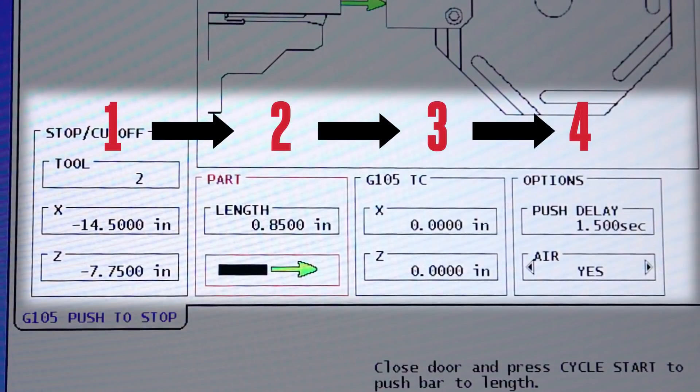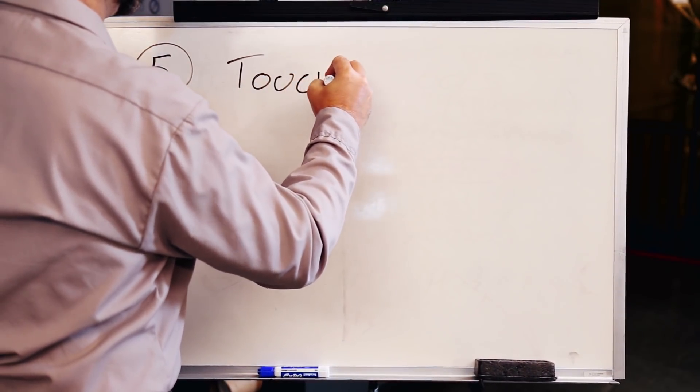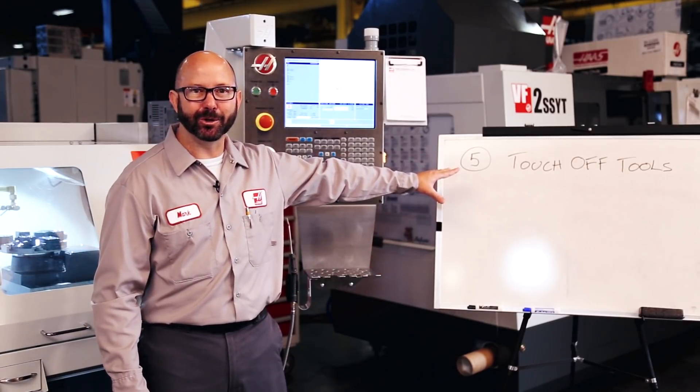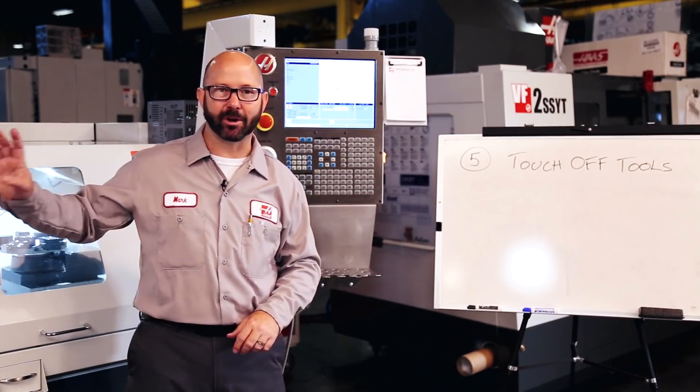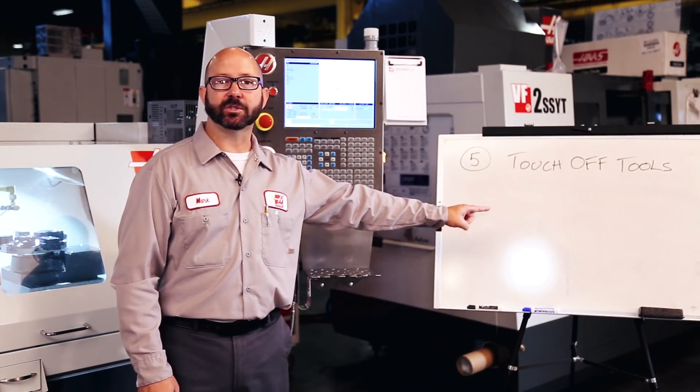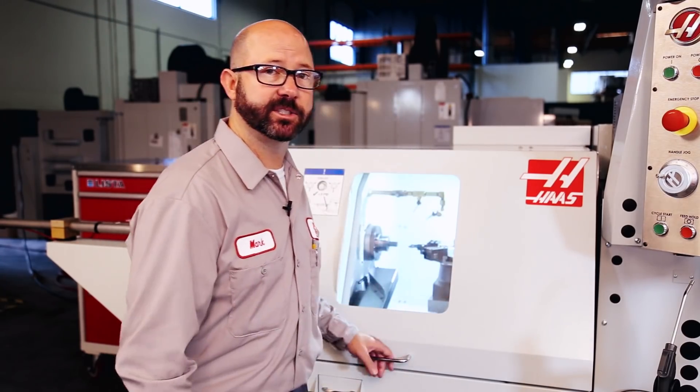And now it's time to fill in column five. Well, there is no column five. If there was a .5 here, it would be to touch off our tools. It's at this point, after we've loaded our bars and filled in our four columns, that we need to touch off our tools. Just like you would on any Haas lathe. But there are a couple unique things about the CL that we want to consider.